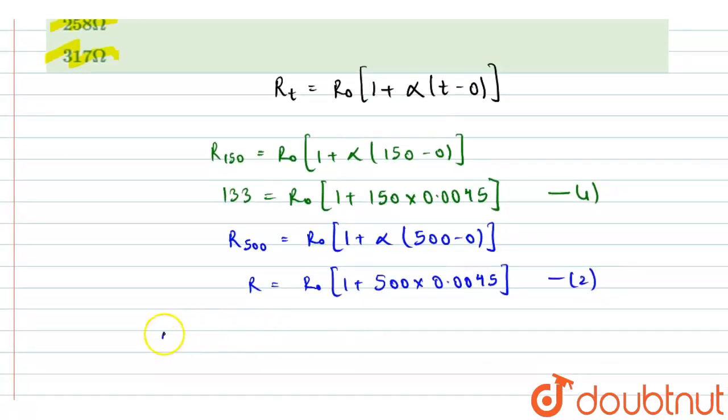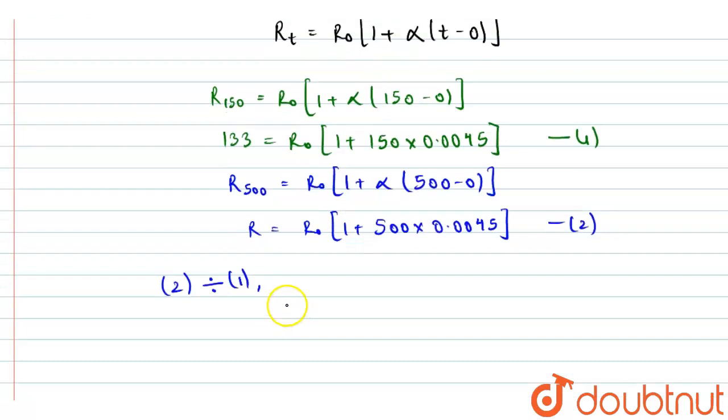So if I divide equation 2 by equation 1, then we will get R divided by 133 ohms equals to, R₀ and R₀ will cancel out because it is a common quantity, and further we will get 1 plus 500 into 0.0045 whole divided by 1 plus 150 multiply by 0.0045.